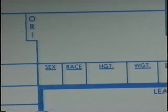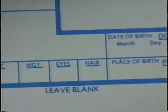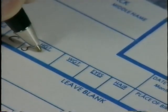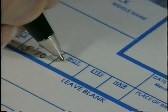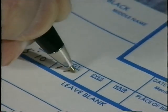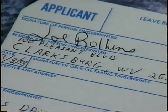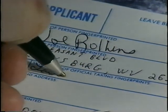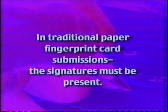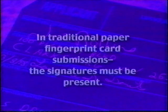The fingerprint card has an upper area, called the masthead, which you are to complete. It includes personal identifying information such as the person's date of birth, height, weight, and eye color. This information must be provided. Leaving out personal information may result in the card being returned to you. The person being fingerprinted should sign the card, and you as the technician should sign and date it within the designated boxes. In traditional paper fingerprint card submissions, the signatures must be present. There may be exceptions in live scan. A fingerprint technician should require a positive form of identification — something with a photograph is preferable.